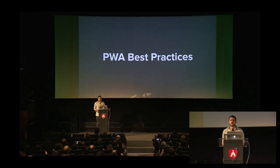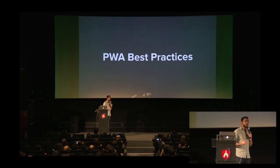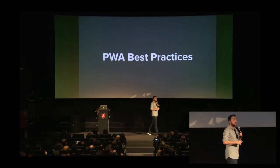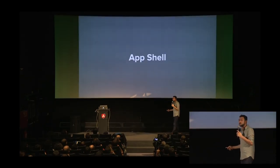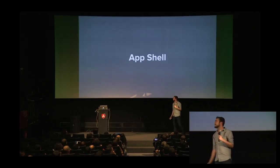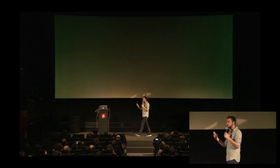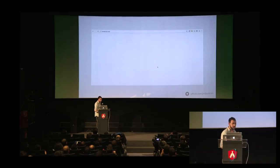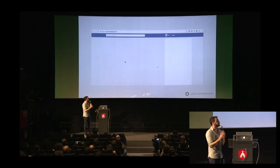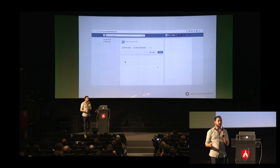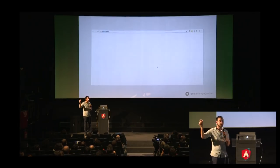Now let's look at progressive web app best practices. You can make any app a progressive web app, but we should follow best practices. The first one is the app shell. In Facebook, you can see that on a throttled connection, in the first few seconds a minimal UI is drawn on screen — just the header and sidebar, no content yet.